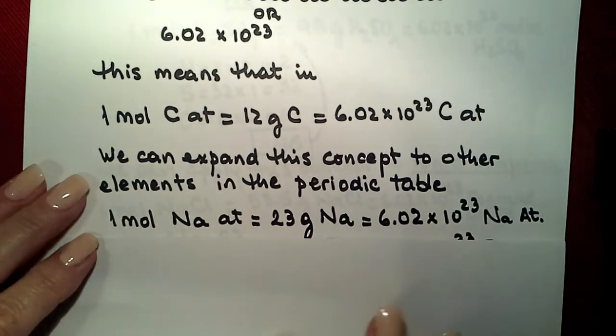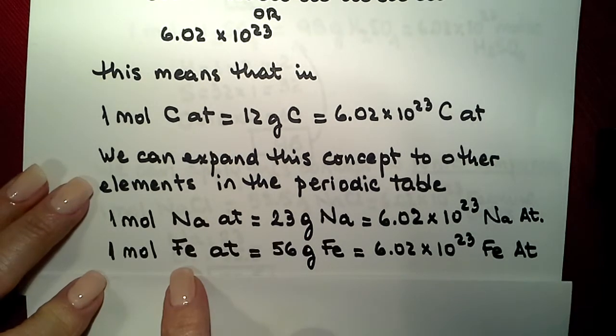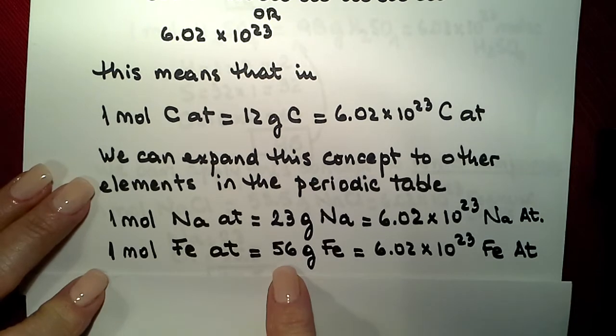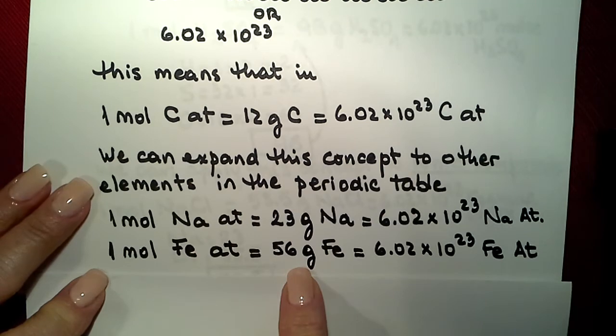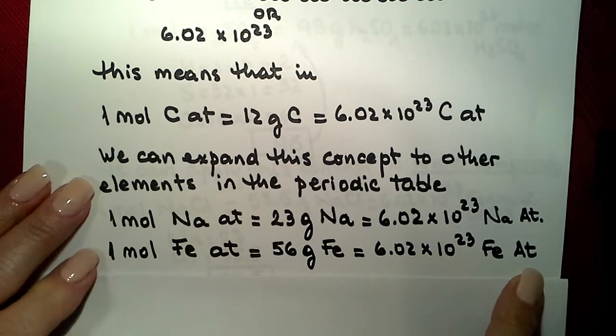If we want to represent one mole of iron atoms, we are going to represent 56 grams of iron because that is the mass of the iron in the periodic table. And this is going to be also 6.02 times 10 to the 23rd iron atoms.